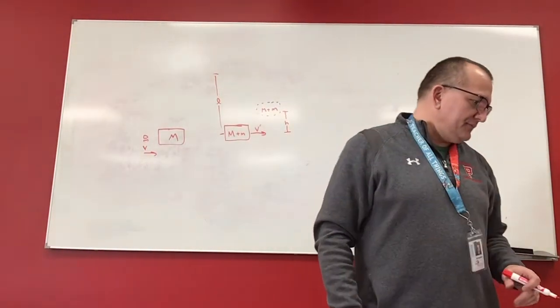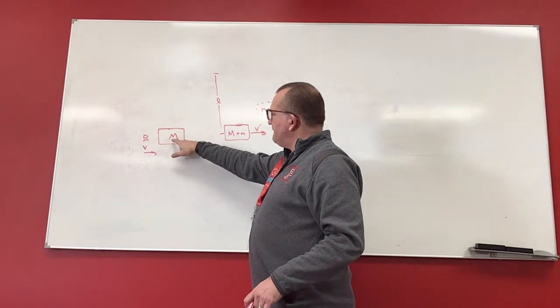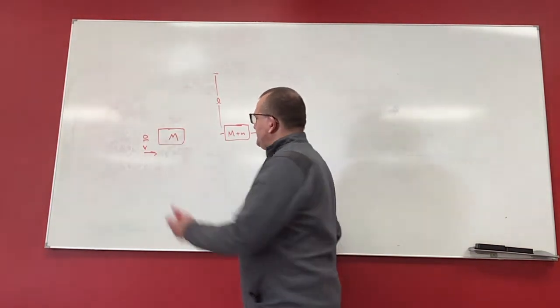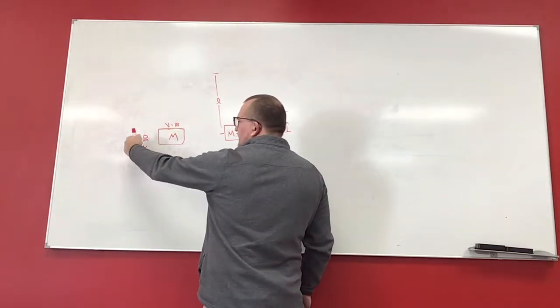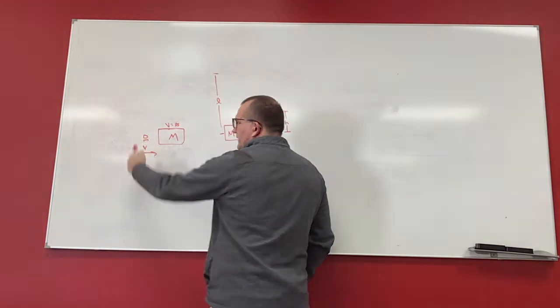All right, so we're looking at the ballistic pendulum. Here's the mass of the big block. It's stationary, so its velocity is zero. The small bullet has a mass of lowercase m, and it's going that velocity.